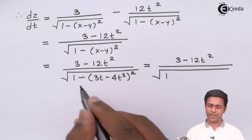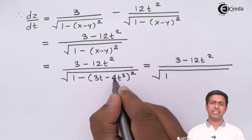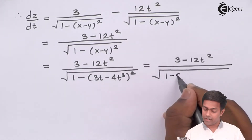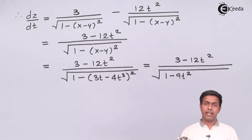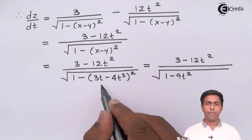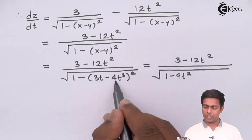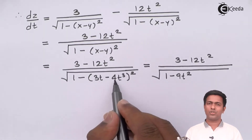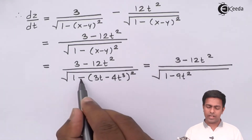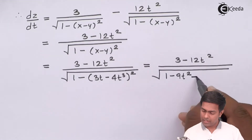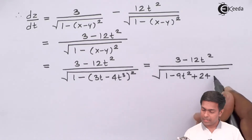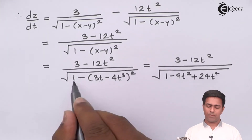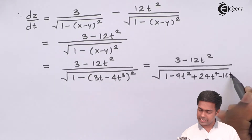Applying the expansion, a² is 9t², and since there is a negative sign outside it becomes negative 9t². The term minus 2ab gives minus 2 times 3t times 4t³ which is negative 24t⁴, but with the negative sign outside it becomes plus 24t⁴. The last term b² is 16t⁶, and with the negative sign outside it becomes negative 16t⁶.